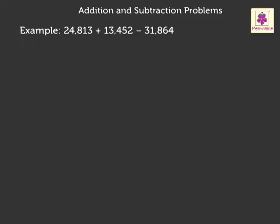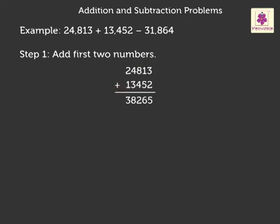So, let us begin with the first step: 24,813 plus 13,452. When we add these numbers, we get the sum as 38,265.